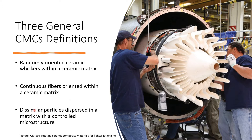The third reinforcement type is dissimilar particles dispersed within a matrix where they control the microstructure. So again, it's just a matrix and we spike something into it — whiskers, continuous, non-continuous fibers, and particles. What we're trying to do overall is improve conventional ceramic properties.